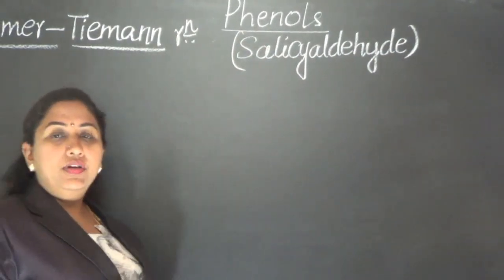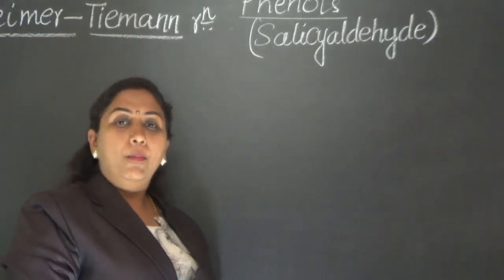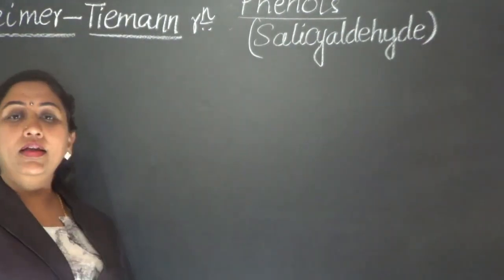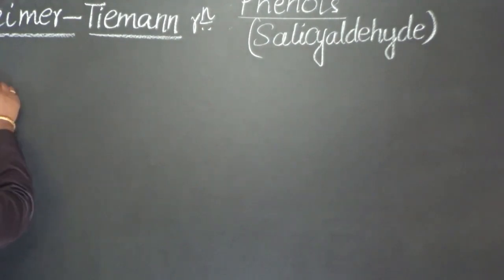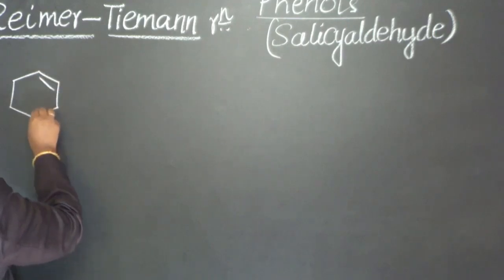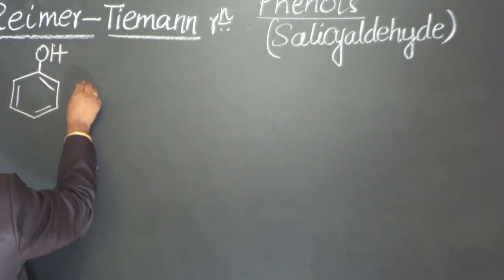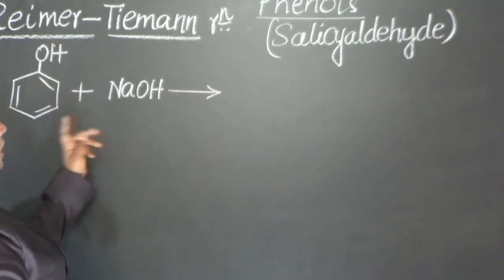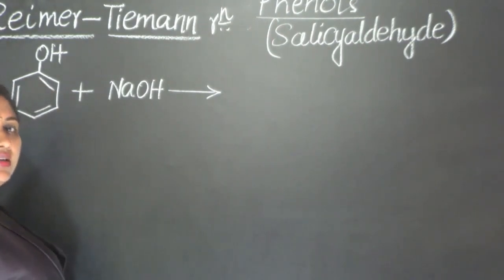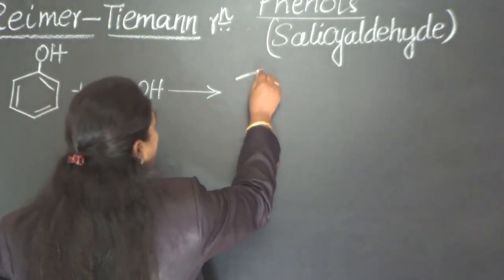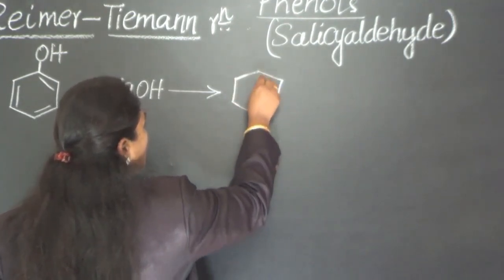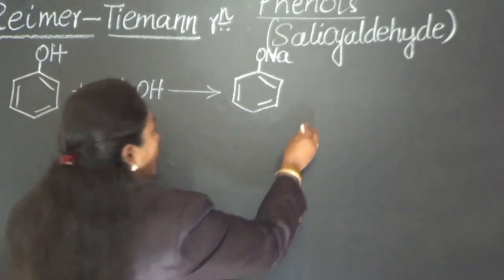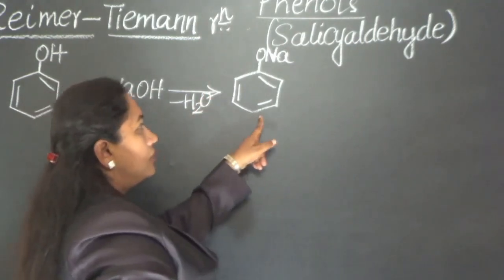Phenol first needs to be converted into sodium salt, that means sodium phenate, by treating it with sodium hydroxide. Phenol is acidic in nature and NaOH is basic, so they undergo neutralization resulting in the formation of salt and water. The H from phenol reacts with OH of NaOH and comes out as water, giving us sodium phenate with O-Na attached to the benzene ring.